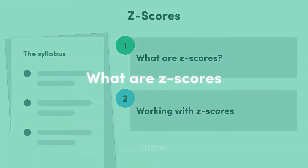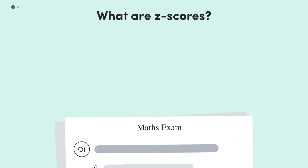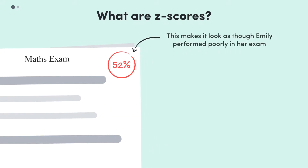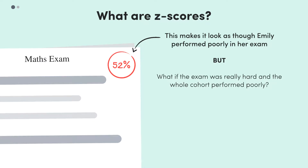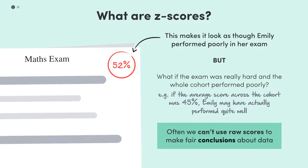To really understand what Z-scores are, we first need to establish why they're necessary. So let's say that Emily scored 52% in her maths exam. Initially, we might say that Emily didn't do too well in that exam, but is this a fair assumption to make? What if the exam was just a really hard one, and the average for Emily's cohort was 45%? Then Emily would have actually scored above the average and have potentially done pretty well. So as we can see here, often we can't use raw scores to make fair conclusions about data.